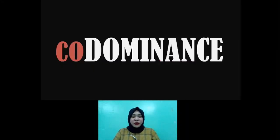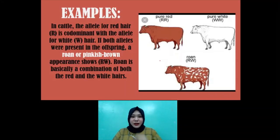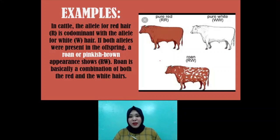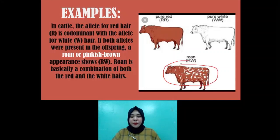The second one is co-dominance. From the term 'co,' it means both of them are dominant. Both alleles contribute to the phenotype of an organism. There is still a blending that happens in the phenotype of the offspring. For example, in cattle, pure red hair is dominant among them, and pure white hair is also dominant among them. So what will happen if these two organisms mate and produce an offspring? Instead of producing a pure red-haired cattle or pure white-haired cattle, they would produce a pinkish brown color — we call it roan.